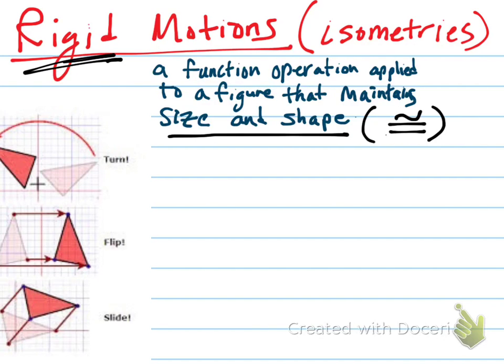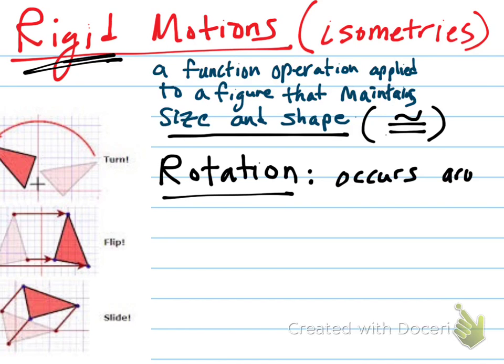So there are three basic types that we want to talk about. Their everyday English terms are here: turn, flip, and slide, but there are some more sophisticated terminologies associated with each. So the first one we'll talk about is a rotation, better known as a turn. And it's important to realize that a rotation occurs around a point